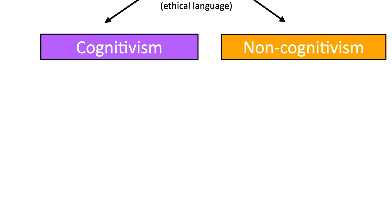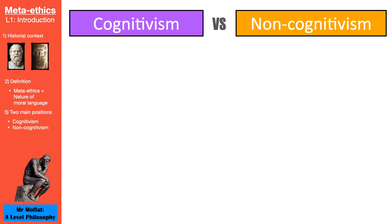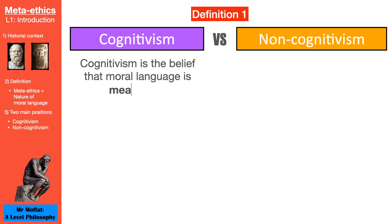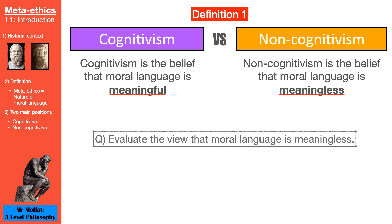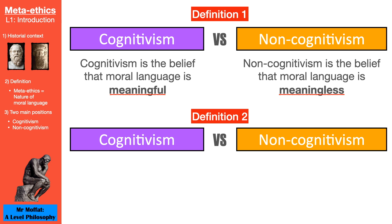Let's start by unpacking the two main sides in metaethics: cognitivism and non-cognitivism. These are terms students tend to get muddled with, but we really want to know these as some exam questions can ask you to evaluate which side is more successful. The simple way of remembering is that cognitivism is the belief that moral language is meaningful, and non-cognitivism is the belief that moral language is meaningless. If an exam question asks you to evaluate the view that moral language is meaningless, they're asking you to evaluate non-cognitivism.